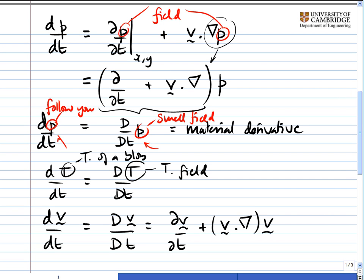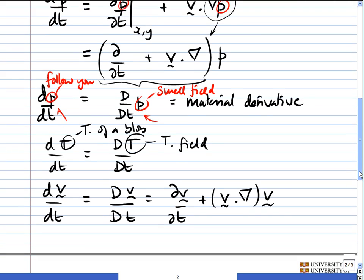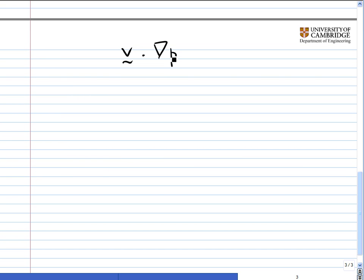So there we have all the important information about the material derivative. I want to consider briefly the question of what this means. The way that I've just derived this, we had the velocity dotted with the smell gradient grad p. Now it's quite legitimate to write this as v·∇, brackets, acting on p. If you expand this out in, say, Cartesian coordinates, you'll find it's exactly the same as that.